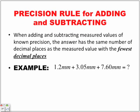The precision rule for adding and subtracting: when adding and subtracting measured values of known precision, the answer has the same number of decimal places as the measured value with the fewest decimal places. When we're adding and subtracting, we are looking at only decimal places — we don't care about significant digits. We are looking at the fewest number of decimal places.